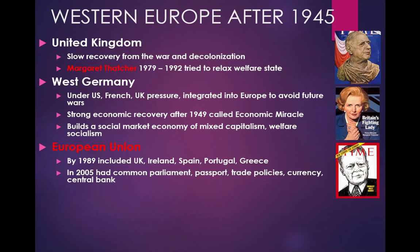By 1989, the European Union included the United Kingdom, Ireland, Spain, Portugal, and Greece. By 2005, it had many more countries with a common parliament, passport, trade policies, currency, and a central bank.